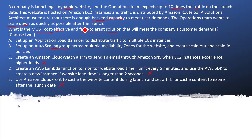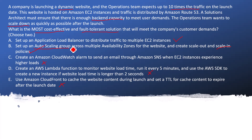Option E: Use Amazon CloudFront to cache it — I am marking this wrong because it is already mentioned this is a dynamic website, so there is no need to think about caching. The correct answers are A and B: using the Application Load Balancer and using the Auto Scaling Group, which lets you scale up and scale down, handling traffic in the most cost-effective way.